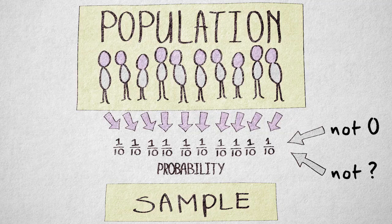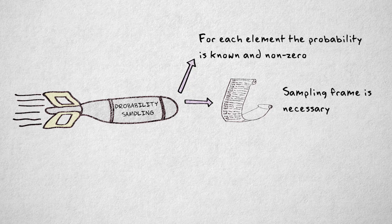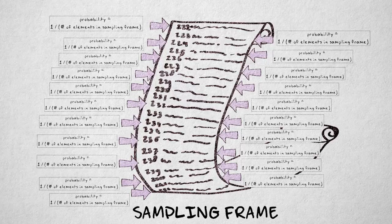To use probability sampling, we need to have a sampling frame, a list of all elements in the population that can be accessed or contacted. A sampling frame is necessary to determine each element's probability of being selected.